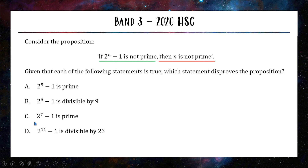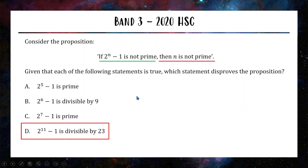If you want to disprove this statement you need to find a scenario where the first part holds true but the second part does not hold true — we want to find an 'if' that doesn't lead to this 'then'. So we're looking for a 2^(n-1) that is not prime. Straight away we're looking at B and D, because in A and C, 2^5 minus 1 is prime, so the first part of the proposition is not satisfied. Out of B and D, both have these expressions being not prime, but we're trying to pick which one has the power of the 2 — which is n — being prime. The answer must be option D: 2^11 minus 1 is divisible by 23 so the first part is satisfied, but the power 11 is itself a prime number. So option D is where the first part is satisfied but the second part is shown to be not true.